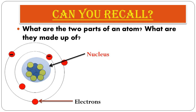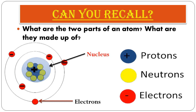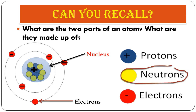At the center of an atom is the nucleus, and there are moving electrons which are negatively charged particles. The nucleus is positively charged. There are two elementary particles in the nucleus: protons, which are positively charged (shown in blue), and neutrons, which are neutral — they have no charge, neither positive nor negative.